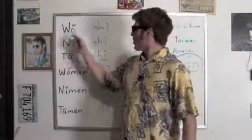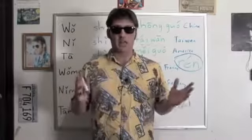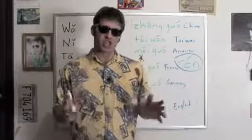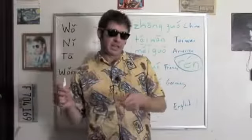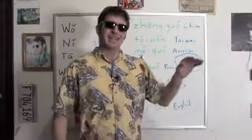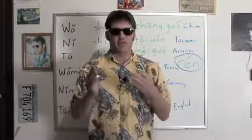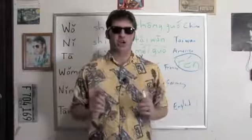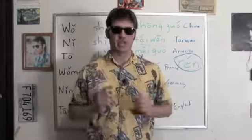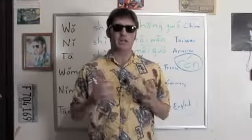One more time through: 我是中国人. 你是台湾人. 他是美国人. 我们是法国人. 你们是德国人. 他们是英国人. We also have the verb 是: 我是老师 — I am a teacher. 你是学生 — You are a student. 我是美国人 — I am American.